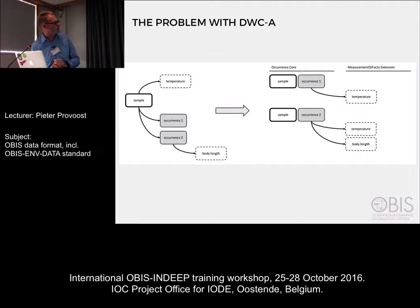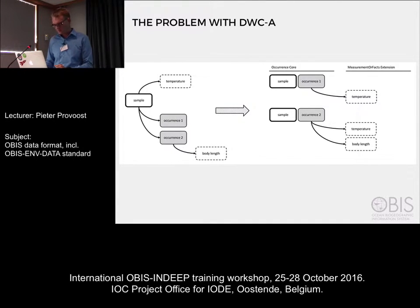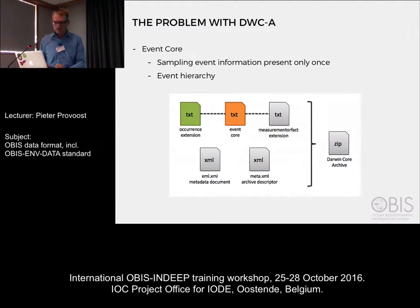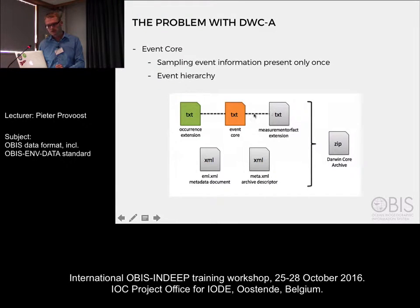For example, if you have a sample with a temperature measurement and some occurrences attached to it, and you want to put this in an occurrence core file with a measurement or fact extension, you would have to add the temperature to both occurrences. Event core is better because you don't have to replicate all the information related to your samples and you can construct a hierarchy of events. But there's a problem: with the star schema, if you have a measurement or fact extension, your measurements can only link to your events and not to your occurrences.